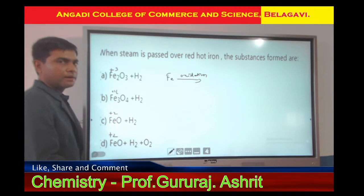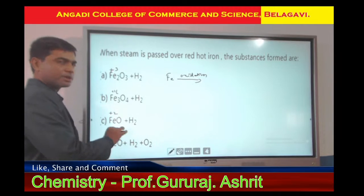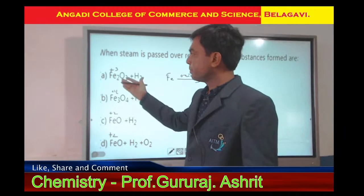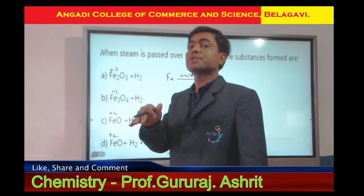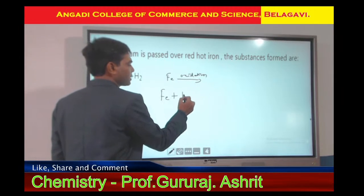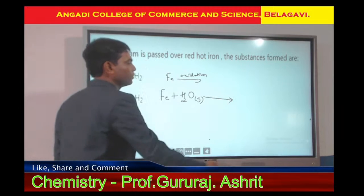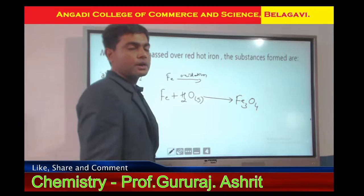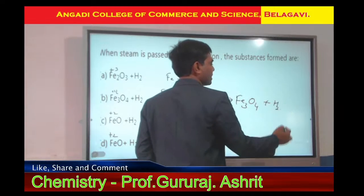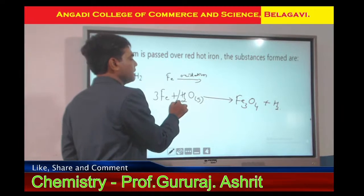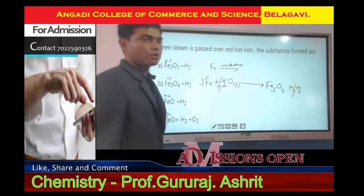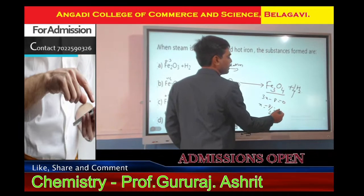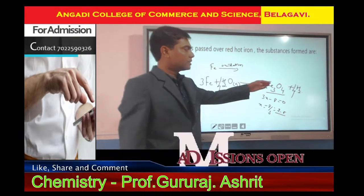One option shows O₂ being liberated, but O₂ is not liberated from water, so that option is eliminated. Steam means a greater amount of molecules, so we prefer the option where the charge of iron is higher or more atoms are involved. The reaction is: 3Fe + 4H₂O (steam) → Fe₃O₄ + 4H₂. Fe₃O₄ is called ferrosoferric oxide or magnetite. To find the oxidation state of iron: 3X − 8 = 0, so X = 8/3, which is approximately 2-point-something.